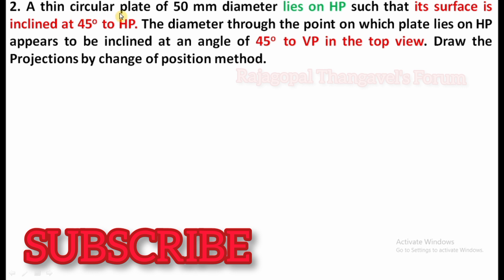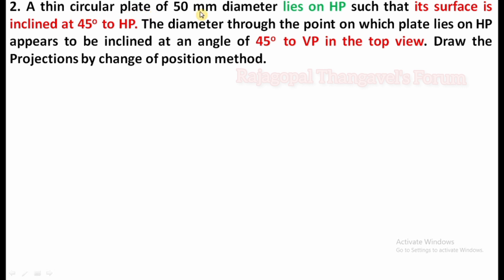Read the question. A thin circular plate of 50 mm diameter lies on HP such that its surface is inclined at 45 degrees to HP. The diameter through the point on which the plate lies on HP appears to be inclined at an angle of 45 degrees to VP in the top view. Draw the projections by change of position method.